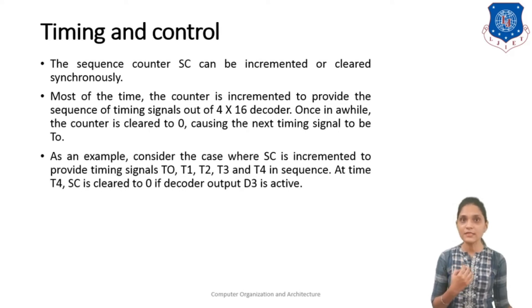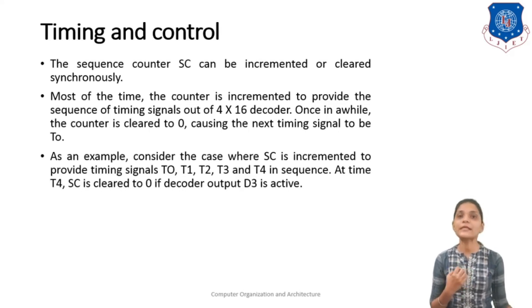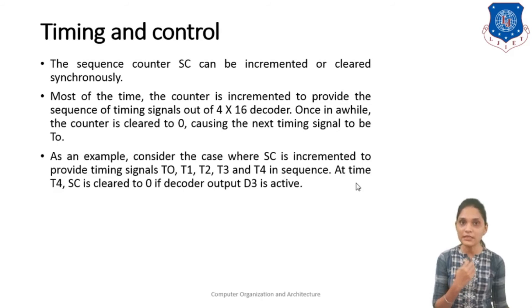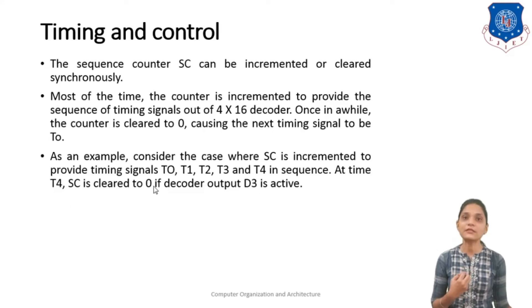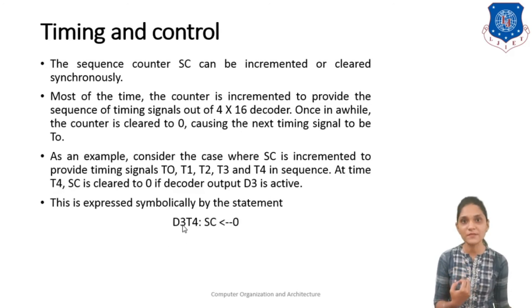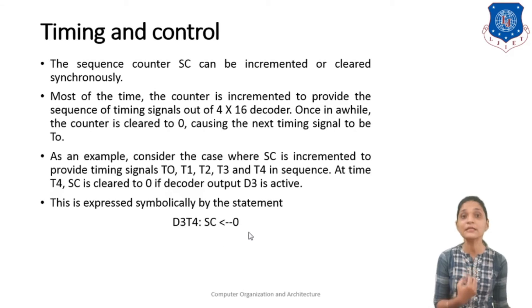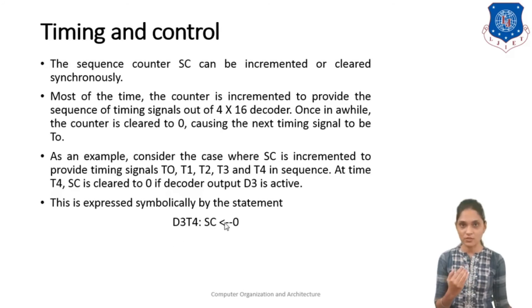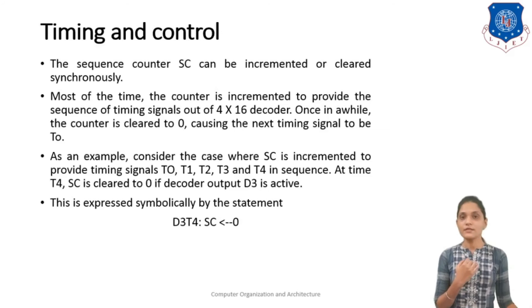For example, consider the case where the sequence counter is incremented to provide the timing signals T0, T1, T2, T3, and T4 in sequence. After T4, the next signal would be T5, but at the time of T4 the sequence counter is cleared to 0 if the decoder output D3 is activated. This condition is represented as D3·T4 — that is, if control signal D3 is generated and timing signal T4 is generated, then at that time you clear the sequence counter to 0, meaning you can start the next instruction.